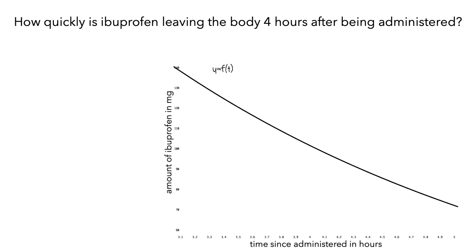Let's start by looking at the average rate over the interval from 4 to 4.5 hours. We'll use the length of a red arrow to show the amount of change in time from 4 to 4.5 hours, and the length of a blue arrow to represent the change in the amount of ibuprofen — in this case, it's negative 15.9977 milligrams.